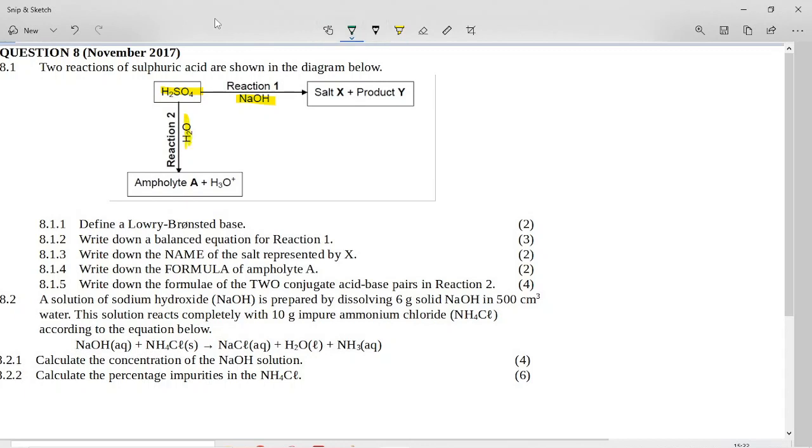So it first says define a Lowry-Bronsted base. Remember there's the Arrhenius theory. If you are a base, a base is a proton acceptor. Remember that a proton is just a little H+. This one here, H+, this is what we call a proton because it's a hydrogen atom that's missing its electron.